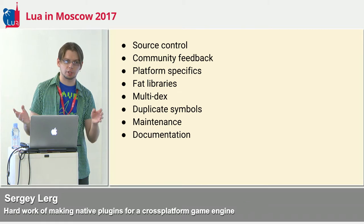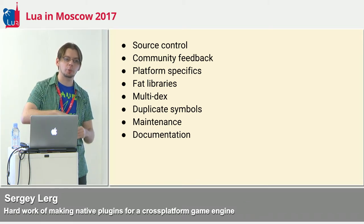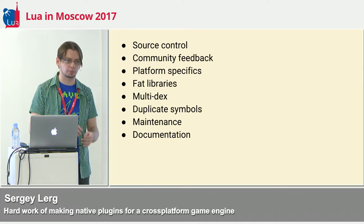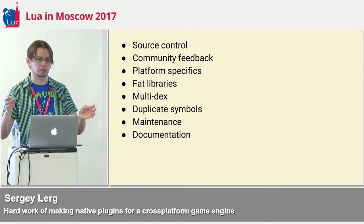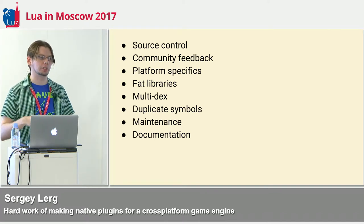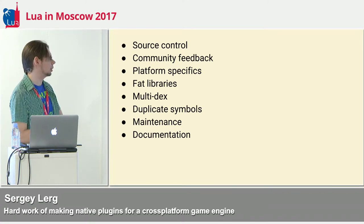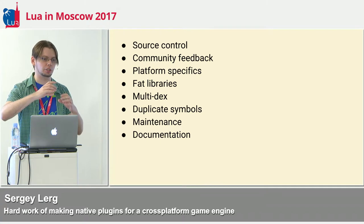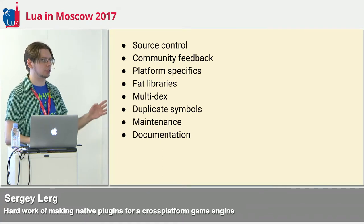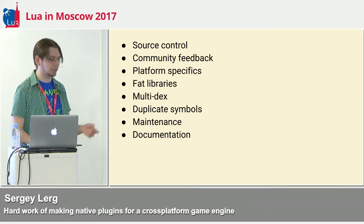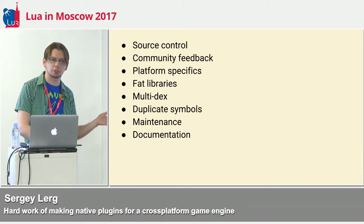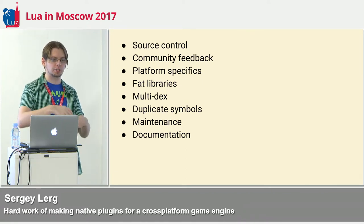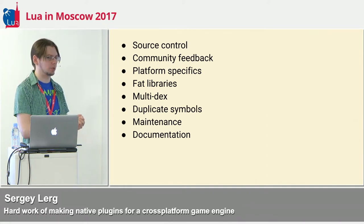Another problem on Android is the dex limit. Dex is a compiled form of Java code, and it has a limit on how many methods and classes it can hold — only 65,000+ methods. With many plugins, when you compile an application with many plugins, you hit that limit very quickly. At Corona, people had to have multi-dex support — when Android packages your application with several dex files to increase that limit. Without Gradle support and Android Studio, that wouldn't have been possible. Duplicate symbols can also happen in Java when you have several classes with the same package name — you have to rename them too. It's a lot of work.